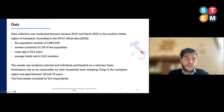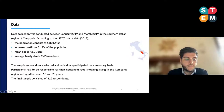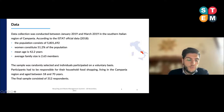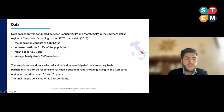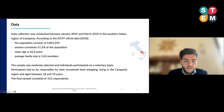In order to collect data, a structured survey was designed, tested, and distributed via computer-assisted web interviewing. The data collection was conducted between January and March 2019 inside the Italian region of Campania. According to the Italian Institute of Statistics, the Campania region is ranked among the most populous regions nationwide. Women constitute 51% of the population, the mean age is 42.2 years, and the average family size is 2.65 members. The sample was randomly selected, and individuals participated on a voluntary basis. Participants had to be responsible for household food shopping, living in the Campania region, and aged between 18 and 70. The final sample consisted of 312 respondents.